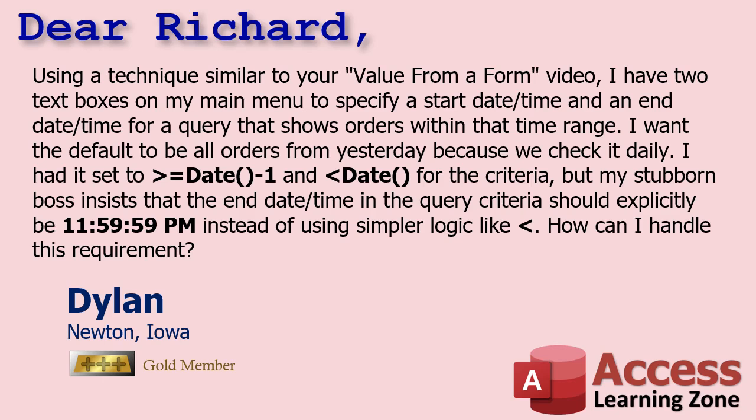Today's question comes from Dylan in Newton, Iowa, one of my gold members. Dylan says: I'm using a technique similar to your 'value from a form' video. I have two text boxes on my main menu to specify a start date time and an end date time for a query that shows orders within that time range. I want the default to be all orders from yesterday because we check it daily. So I had it set to greater than or equal to date minus one — that's yesterday at midnight — and less than date, which is today at midnight, for the criteria. But my stubborn boss insists that the end date time in the query criteria should explicitly be 11:59:59 PM instead of using simpler logic like less than today's date. How can I handle this requirement?